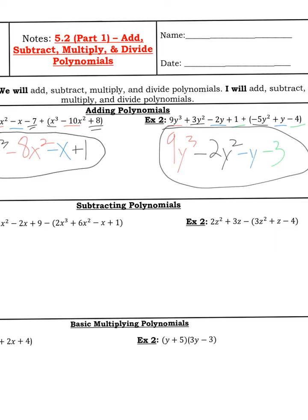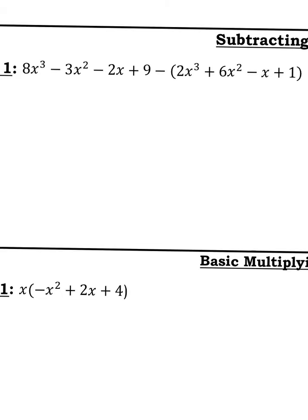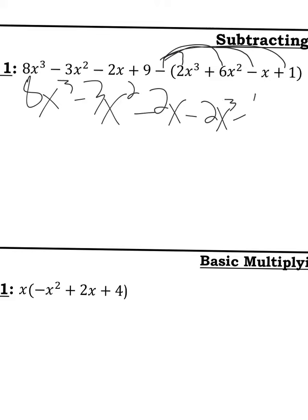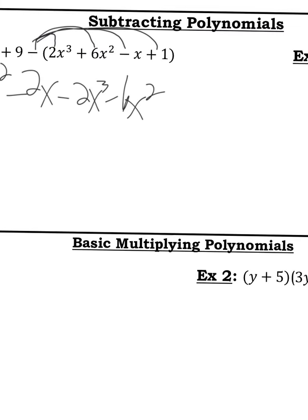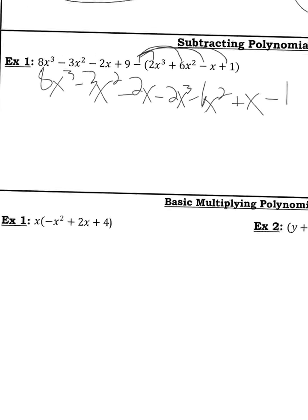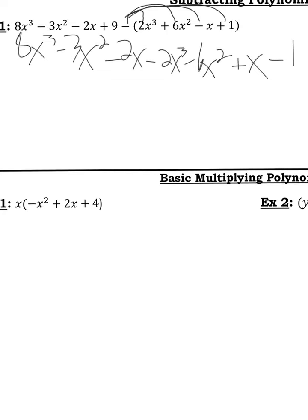Now let's talk about subtracting polynomials. This is where it's important to distribute the negative. So that's what I'm going to do. I'm going to draw an arrow of me distributing the negative, and then I'll rewrite everything. And I will change the signs on everything I just distributed the negative to. So minus 2x to the third minus 6x squared plus x and minus 1. Now I'll do the same thing I did before.